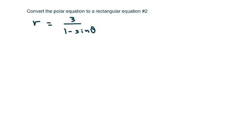So basically, the first thing we're going to do is cross multiply. And I get r minus r, because I'm going to put that over 1, sine of theta equals 3.